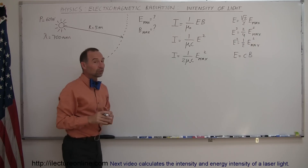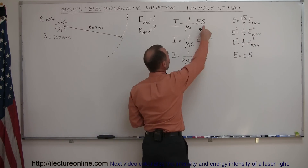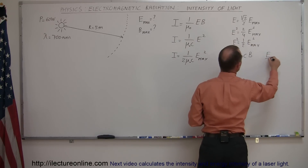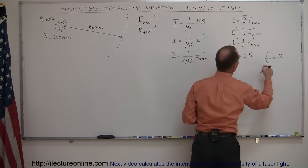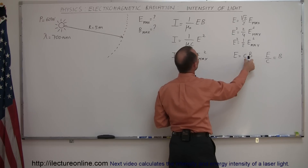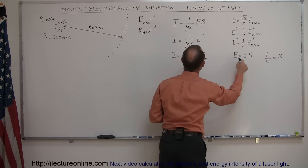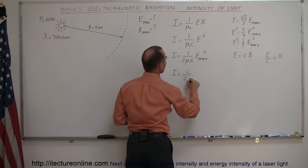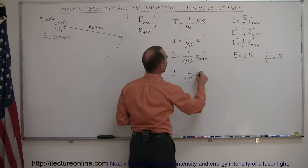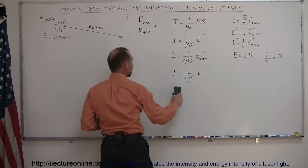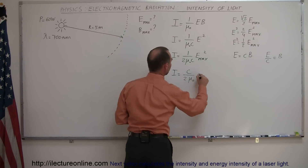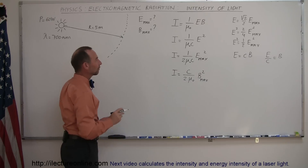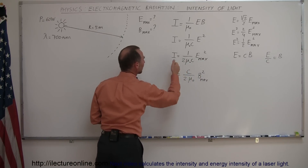We can also express this equation in terms of the B field. Since E over C equals B, we can solve for E: E equals CB. Substituting, the intensity equals C divided by 2 mu sub-naught times B_max squared. Now we have the relationship between E_max and B_max to the intensity.